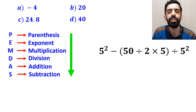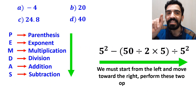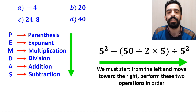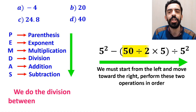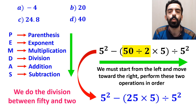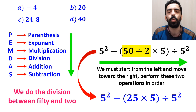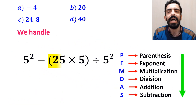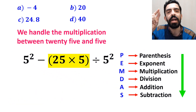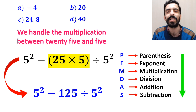In this situation, we must start from the left and move toward the right, performing these two operations in order. So first we do the division between 50 and 2. This expression simplifies to 5 squared minus 25 times 5 inside the parenthesis, then divided by 5 squared. In the next step, we handle the multiplication between 25 and 5, and this expression simplifies to 5 squared minus 125 divided by 5 squared.